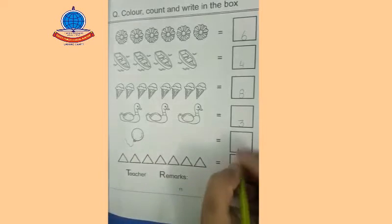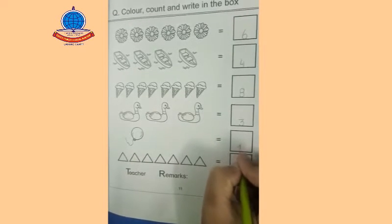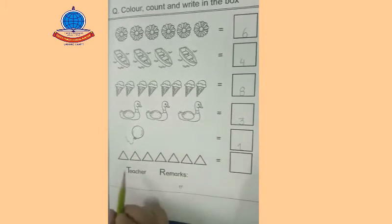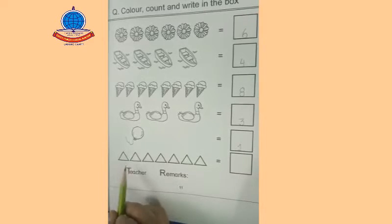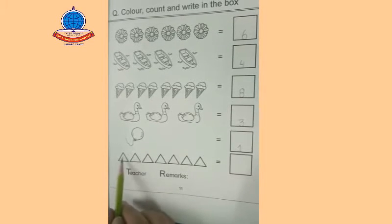And we have one balloon here. Write number one in the box. And what are our next objects? These are triangles. Count them: 1, 2, 3, 4, 5, 6, 7.